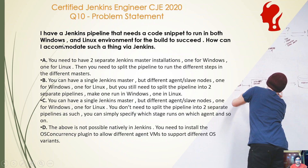Option A: you need to have two separate Jenkins master installations, one for Windows and one for Linux, and split the pipeline to run different steps in the two different masters. Option B: you can have a single Linux Jenkins master and different agent or slave nodes — one for Windows and one for Linux — but you still need to split the pipeline into two separate pipelines.